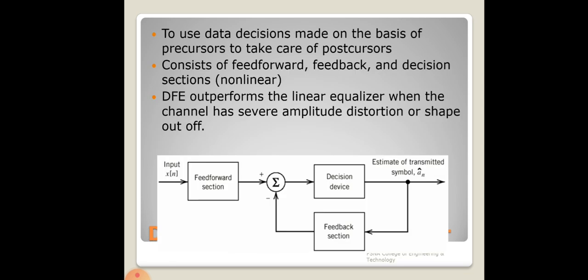The decision feedback equalizer (DFE) has a forward section, a decision device, and a feedback section. The estimated symbol is fed back to the summer to recover the signal equivalent to the original. Decisions are made based on precursors to handle post-cursors. The system is non-linear and outperforms linear equalizers when the channel has severe amplitude distortion.